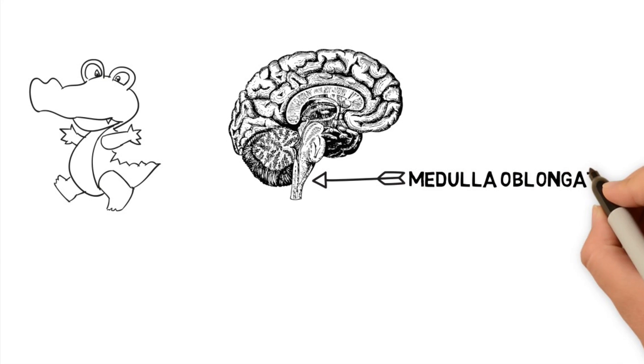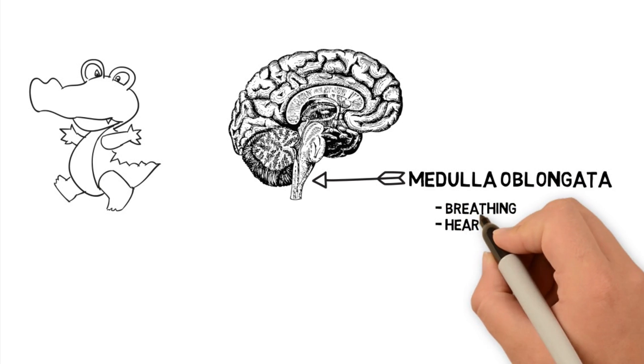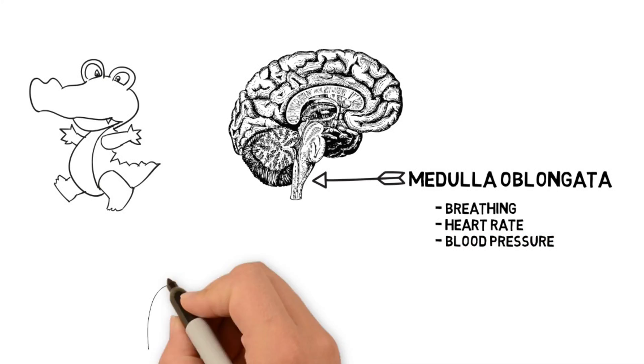The structure right above the spinal cord is called the medulla oblongata. It is involved in our breathing, blood pressure, and heart rate. If you get stabbed or you damage your medulla in any way, you're going to die.